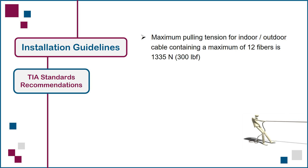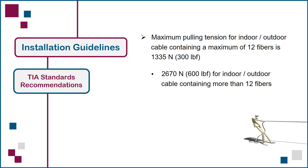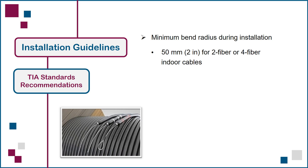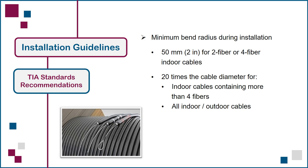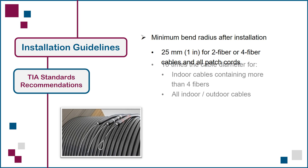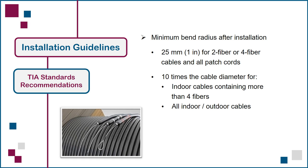For indoor-outdoor campus cables containing up to 12 fiber strands, the pulling tension must not exceed 1335 N or 300 lb force. This value is doubled for cables containing more than 12 fibers. The standards recommended limit for bending two fiber or four fiber cables during installation is no less than a 50 mm bend radius. For all other cable types, it's no less than 20 times the outside diameter of the cable. After the cable has been installed, these minimum bend radius values are reduced by half, and they also apply to all fiber patch cords. Note that these are all general recommendations published in cabling standards; any vendor can expand or reduce these limits for the cables or cords they manufacture.